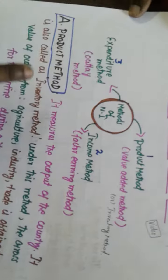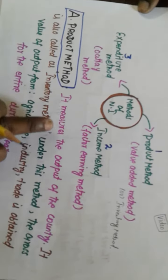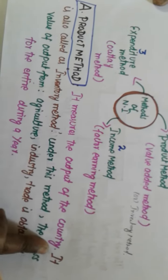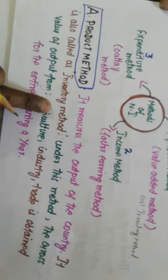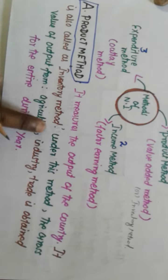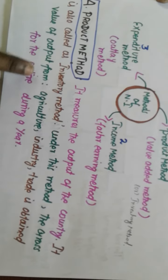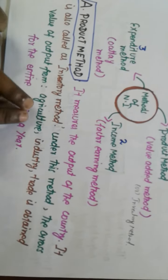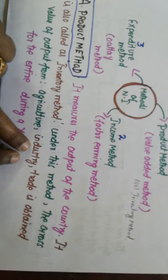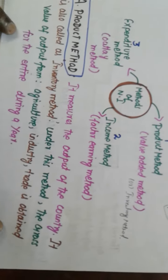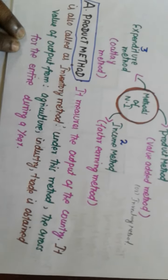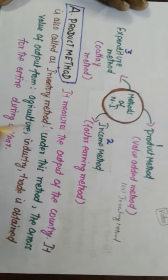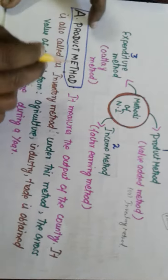First, we are going to see what is meant by product method. This product method measures the output of the country. It is also known as inventory method. Under this product method, the gross value of output, the total production made in primary sector agriculture and secondary sector industry, trade, and everything, is obtained and accumulated together for a particular year. That we can call the product method.